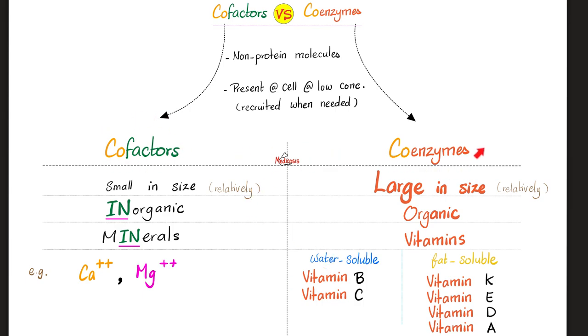Cofactors versus coenzymes. Cofactors are relatively small. Coenzymes are relatively large. Cofactors inorganic. Coenzymes are organic. Cofactors include minerals. Coenzymes include vitamins. Look at my mnemonic. Cofactors are inorganic, and they are minerals.